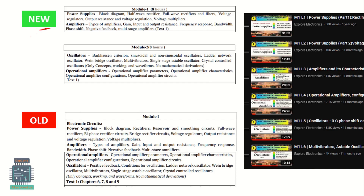Looking at the new subject versus the old syllabus Basic Electronics, the modules start with power supplies: block diagram, half-wave rectifier, full-wave rectifier, filters, and voltage regulator, output resistance, voltage regulation, and voltage multipliers. In the new syllabus, the first chapter is also power supplies - block diagram, rectifiers, filters (called reservoir and smoothing circuits), bridge rectifier, voltage regulator, output resistance, voltage regulation, and voltage multipliers. So this first module is essentially the same.